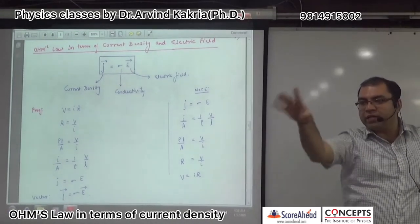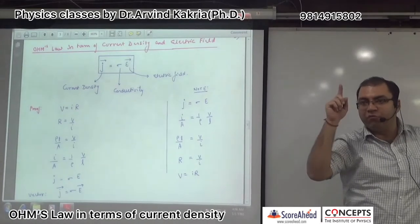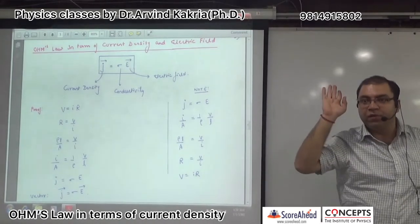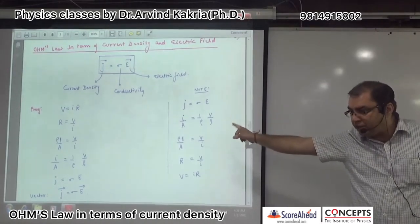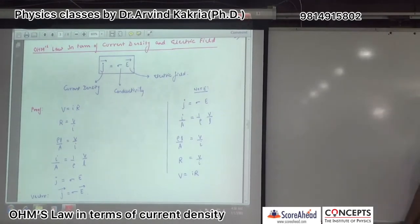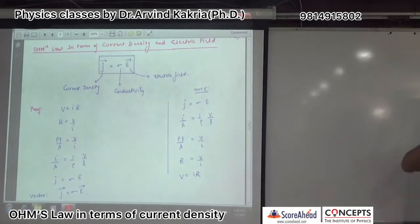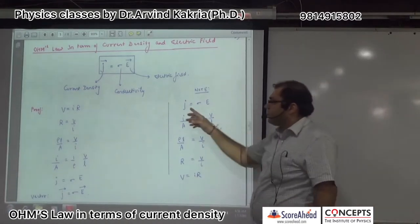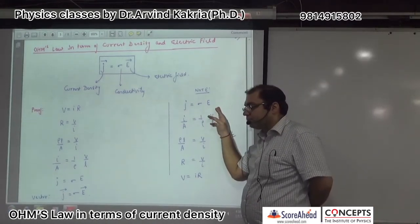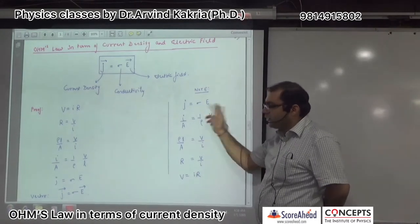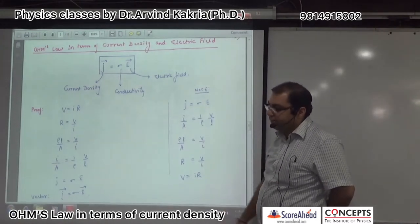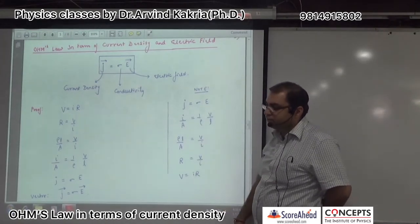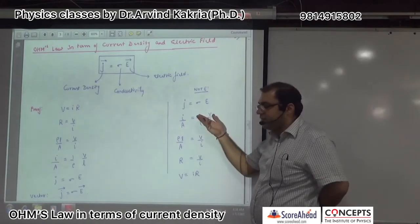The same result is given in the booklet, it is given in the proof, but it is given in a difficult way. To do this note, let's see. J is σE. Yes, this must be remembered. Ohm's law. It is a formula in terms of current density. Yes, in terms of current density. Absolutely, alright.